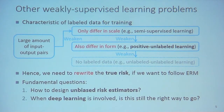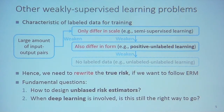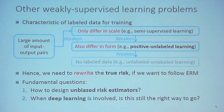In this kind of learning problem, we have to rewrite the true risk if we still want to follow empirical risk minimization (ERM) rather than brainstorm some ad-hoc learning objective. This gives us two fundamental questions. The first is: how can we design unbiased risk estimators that will be used in the ERM framework? The second is: when deep learning is involved, is this still the right way to go?